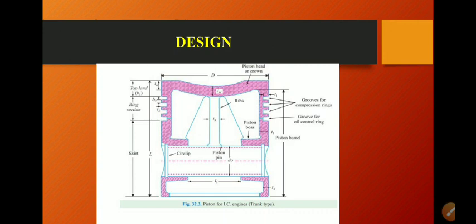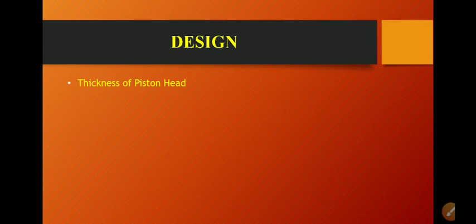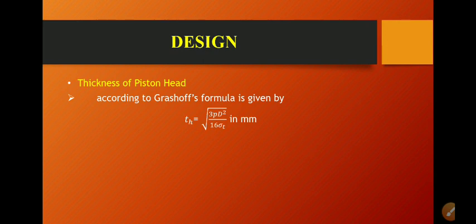For the design of the piston, we need to evaluate a number of terms: top land width b1, other land width b2, thickness of grooves t1 and t2, piston barrel, and length of skirts. The first parameter to calculate is the thickness of piston head, denoted th. According to the Grashof formula, th is equal to the square root of 3p times D squared divided by 16 times sigma_t.